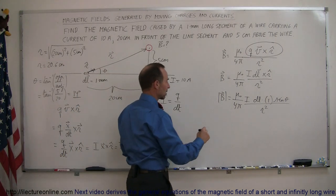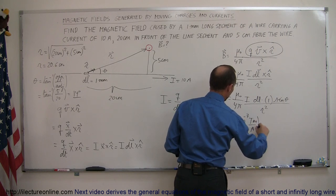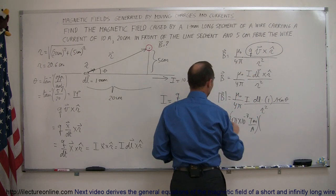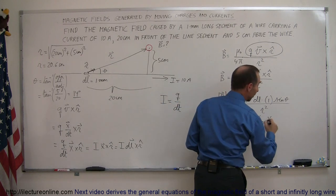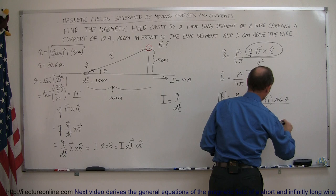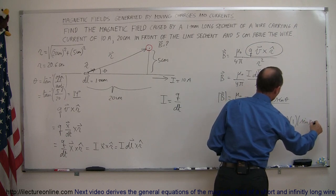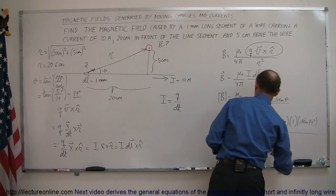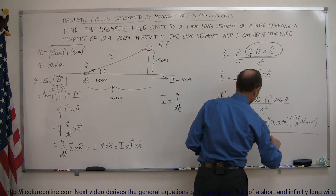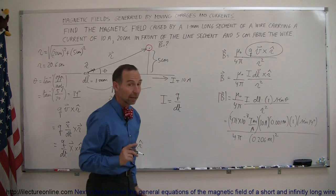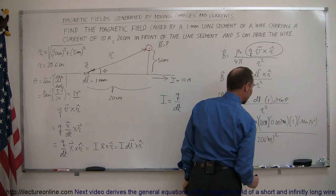Plugging in the numbers: B equals 4π × 10⁻⁷ tesla·meters per amp, times 10 amps, times 0.001 meters (DL = 1 mm), times 1 (the unit vector magnitude), times sine of 14 degrees, all divided by 4π times (0.206 meters) squared. Notice the 4π cancels, amps cancel out, and meters times meters over meters squared all cancel, leaving us with units of tesla.